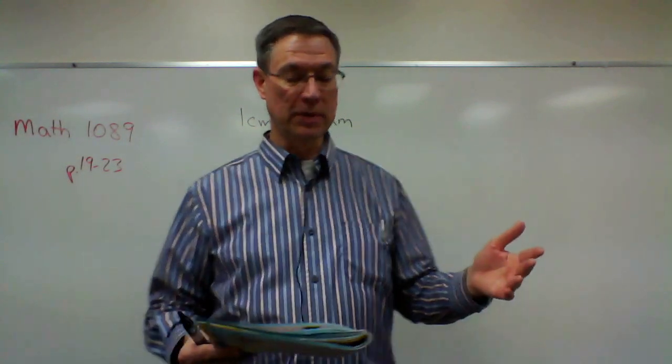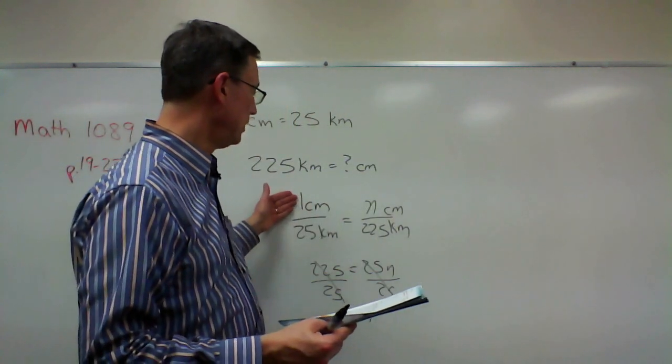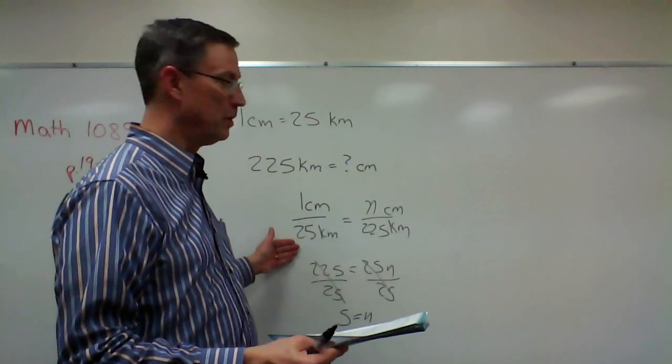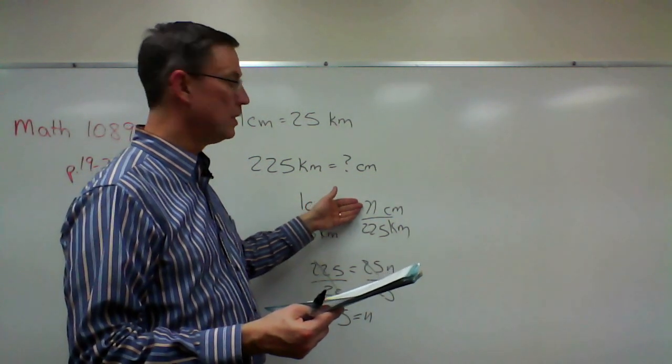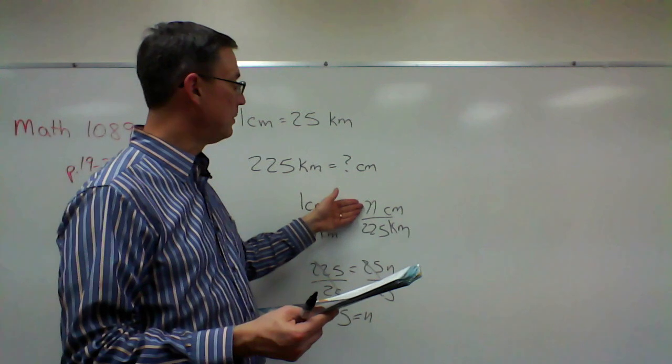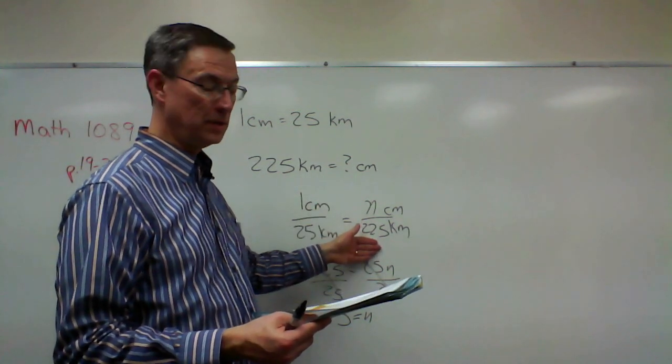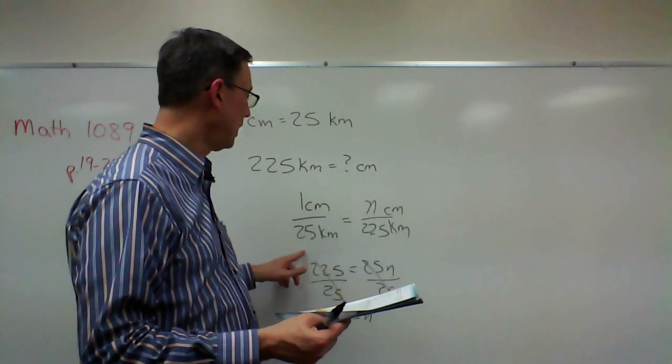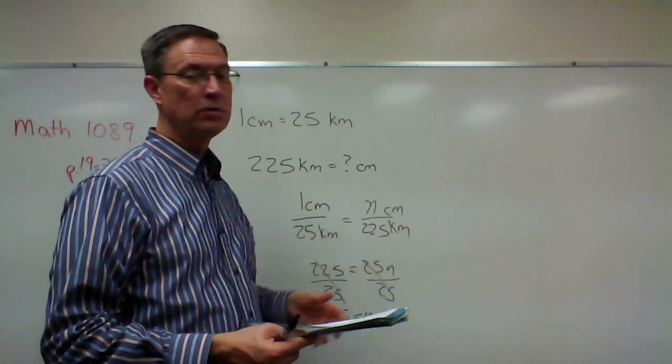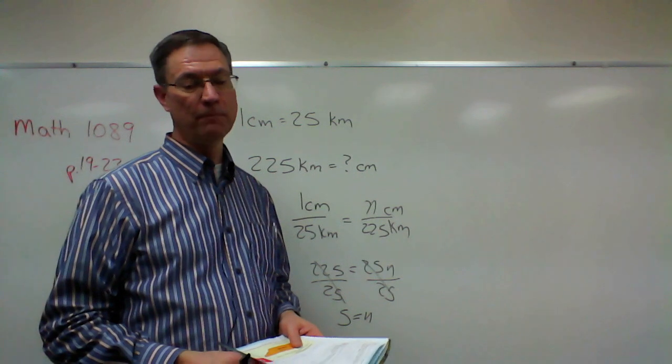And so you set up a ratio the same way, except we'll do one centimeter is to 60 kilometers. And then this time you'll put in the 9.7 up here for the centimeters and you're solving to find the distance in kilometers. And so you'll cross multiply and then multiply these two together and then divide in order to find N.